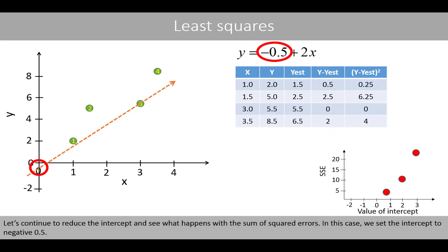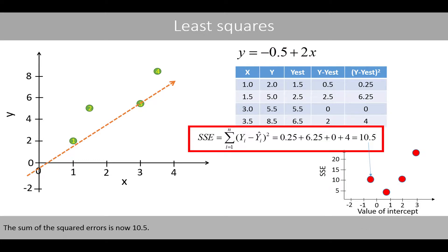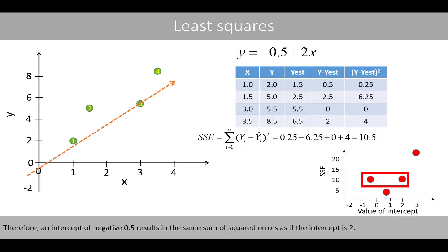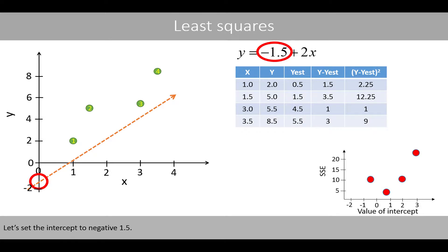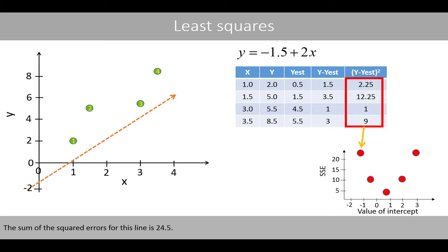Let's continue to reduce the intercept and see what happens with the sum of the squared errors. Setting the intercept to negative 0.5 gives a sum of squared errors of 10.5 — the same as when the intercept was 2. Setting it to negative 1.5 gives a sum of squared errors of 24.5.